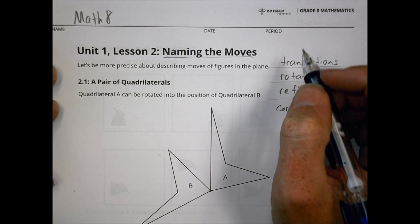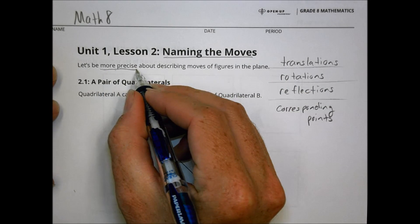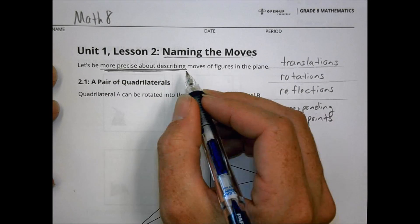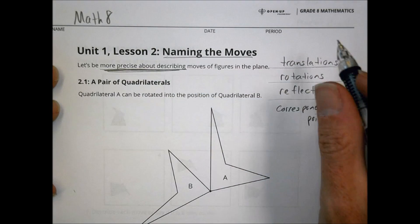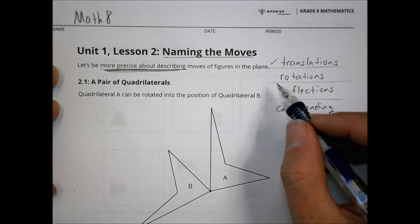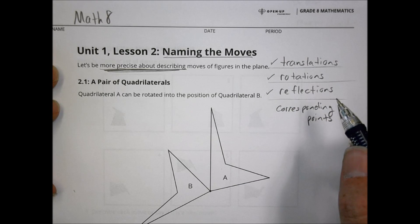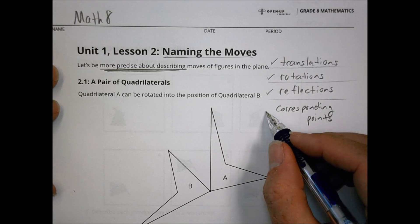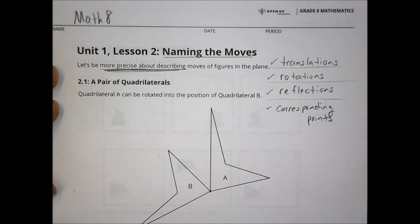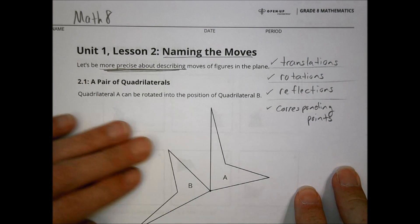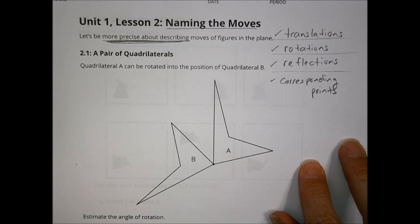Today's lesson was about being more precise when describing the moves when a shape is moved from one position to another. You learned words like translations, rotations, reflections, and you probably also talked about corresponding parts. I want to review that as a way of recapping today's lesson before moving to the homework corrections.